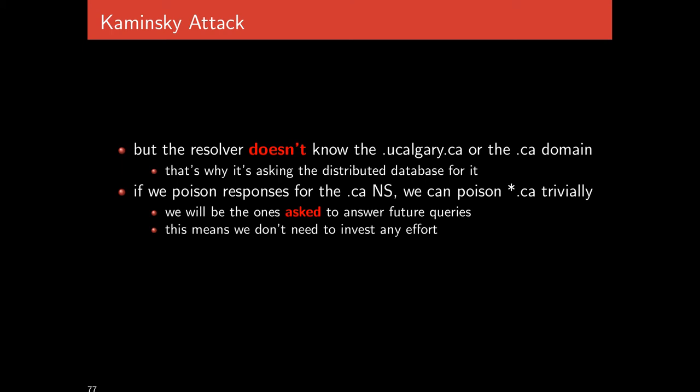In a sense, we're putting ourselves on path. When Alice makes a DNS request to something .ca, if we've poisoned her resolver's idea of who to ask to get answers for .ca to be pointing to us, then Alice will ask us how to get to this website and we can tell Alice whatever we want. This also means we have very little additional effort afterwards — we only need to poison it once, and we'll just start getting queries all the time. Everyone will start delegating to us because everyone will think we are the authority for this information.